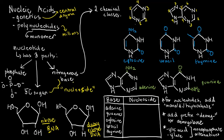The third component is called the nitrogenous base, or basically just 'base.' Now, occasionally we will encounter the word nucleoside. This is not the same as nucleotide, because nucleosides only contain the nitrogenous base and the sugar — they do not include the phosphate. So the nucleoside only has two components, whereas the nucleotide has three. A nucleotide can be thought of as a nucleoside with a phosphate, or a nucleoside is a nucleotide without a phosphate.